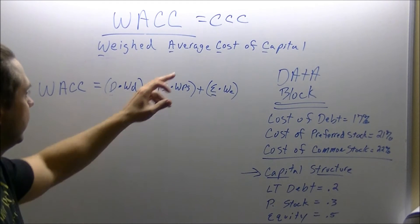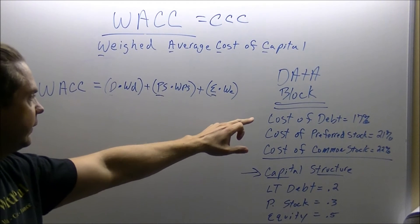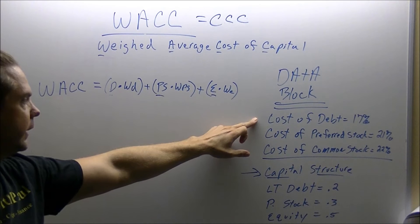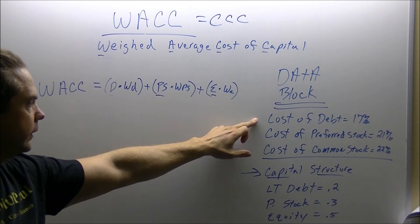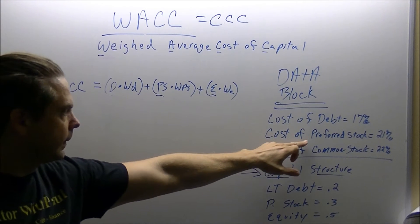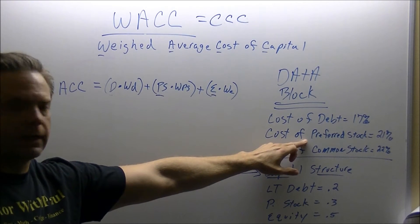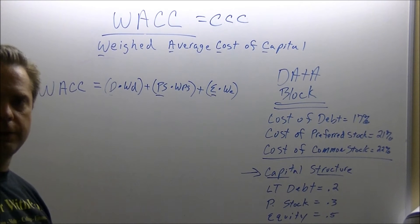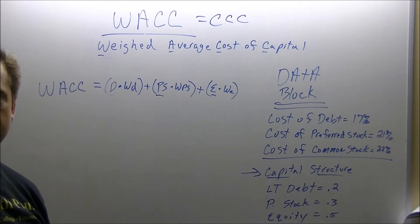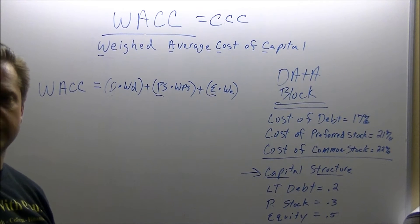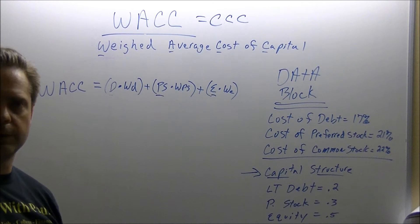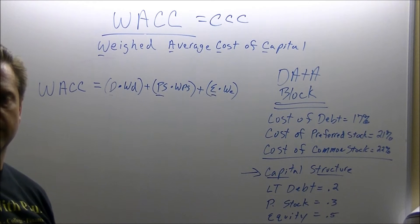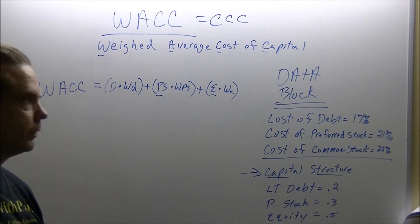The three ways a corporation can get funds to invest into a project is through debt, preferred stock, or common stock. Included in your common stock is also your retained earnings, which is money that the company does not kick back to the owners.